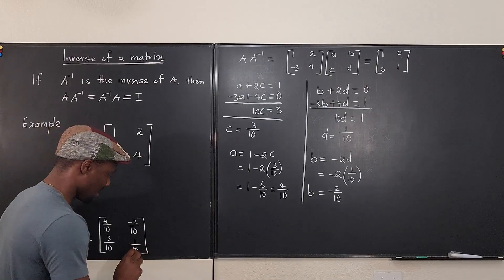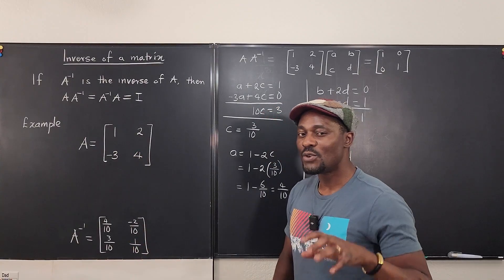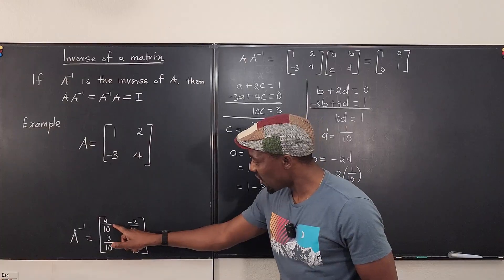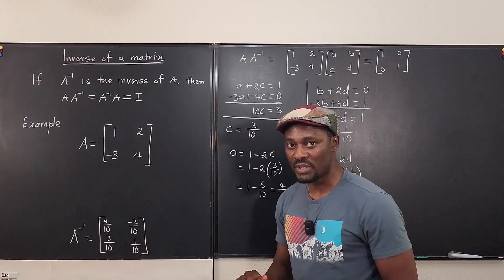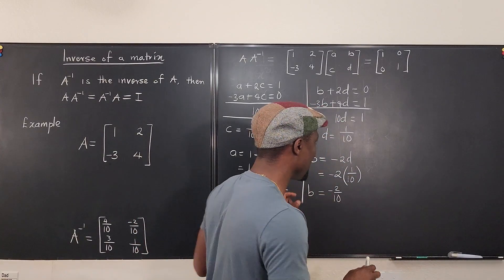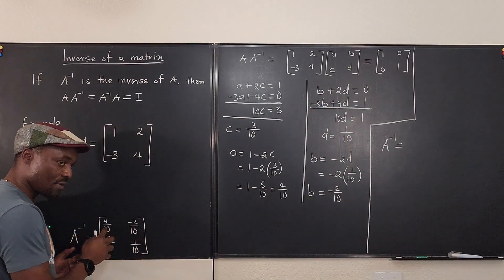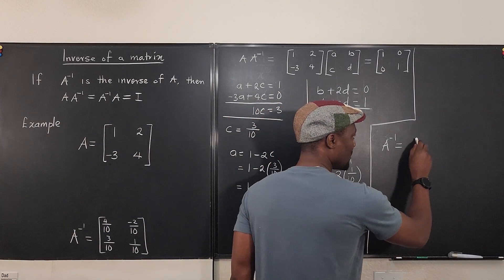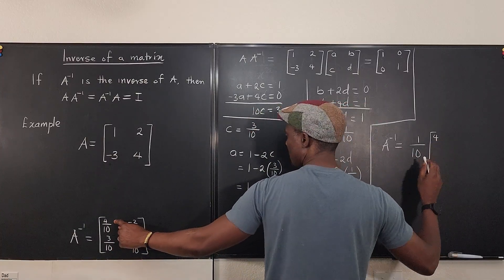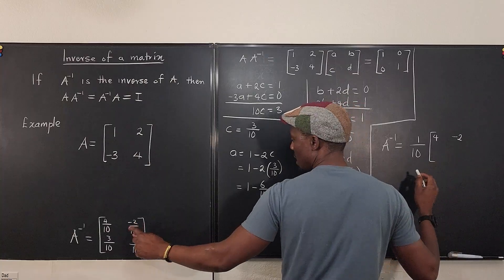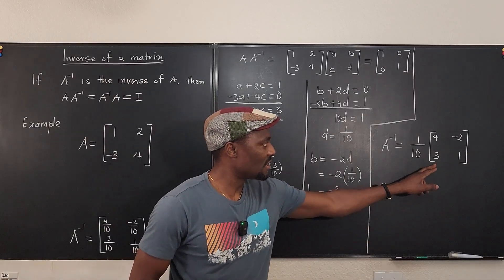We have found the inverse of this matrix. Each entry has denominator 10, so we can factor out 1/10. A-inverse equals one-tenth times the matrix with entries 4, minus 2, 3, 1. I want you to look at this matrix carefully and compare it to the original matrix.